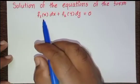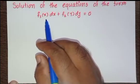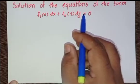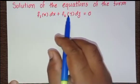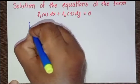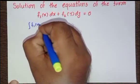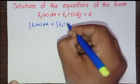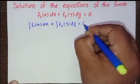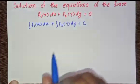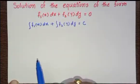In this lecture, I explain how to solve equations of the form f₁(x)dx + f₂(y)dy = 0. When the equation is in this form, its solution obtainable by integration is: ∫f₁(x)dx + ∫f₂(y)dy = C. If the equation is not in this form, then put it in that form or rearrange to separate the variables.